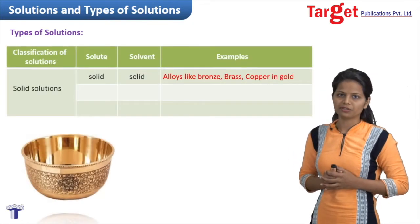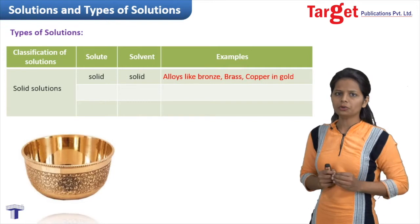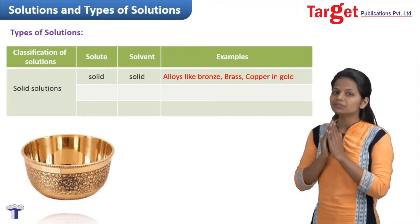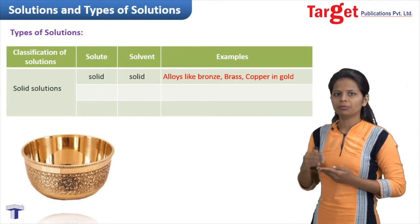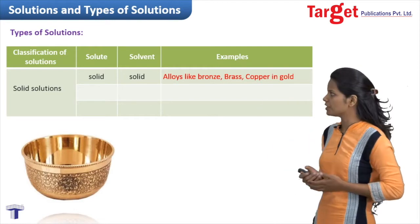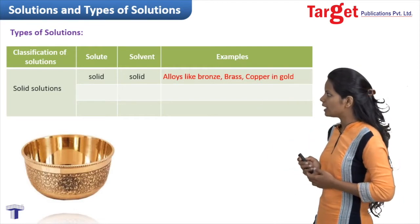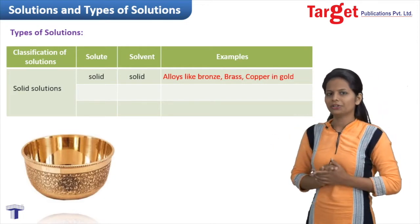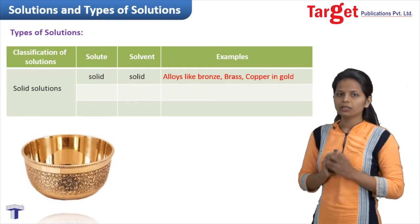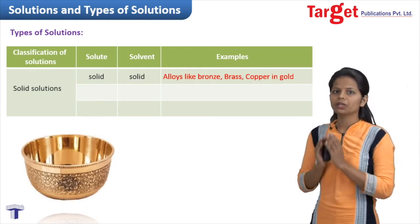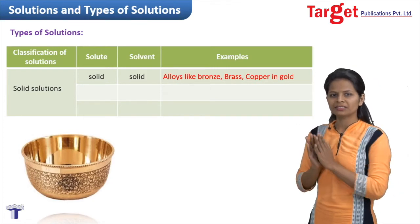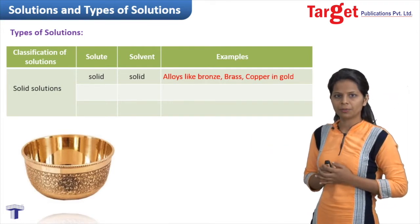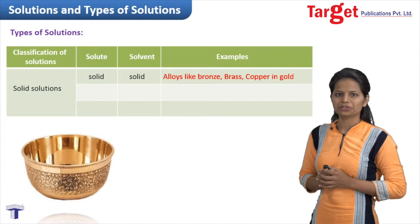First, we are going to study solid solutions — solutions wherein the solvent is present in solid state and the solute can be in either solid, liquid, or gaseous state. The first type is solid-in-solid. The simplest example is any kind of alloy. Alloys are mixtures of metals, and since metals are present in solid state, when two metals are combined — like in a bronze vessel — that is a solid-in-solid type of solution.